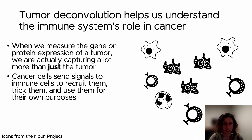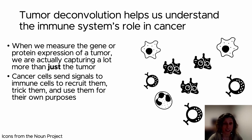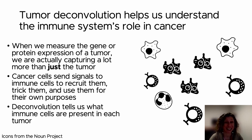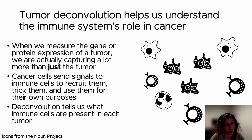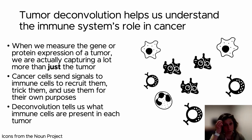These immune cells, or primarily immune cells, are actually being recruited in different ways and can be targeted by independent therapies. So if we better understand the immune cells that are being recruited to the tumor and how many are being recruited — what fraction of the tumor is actually immune — then we can better identify potential immunotherapies.